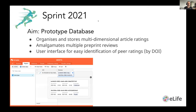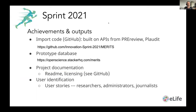The sprint was over two days organized by eLife. Our aim was to build a prototype of this concept — pulling in ratings from a number of different sources and displaying them in an easy user interface for people to identify ratings where they exist. We managed to import code from APIs from PREreview and Plaudit, and we built a prototype database using Airtable and an interface called Stacker HQ. We wrote a README, created a license, and identified user stories spanning researchers, administrators, and journalists who might want to use this tool once it's more developed.